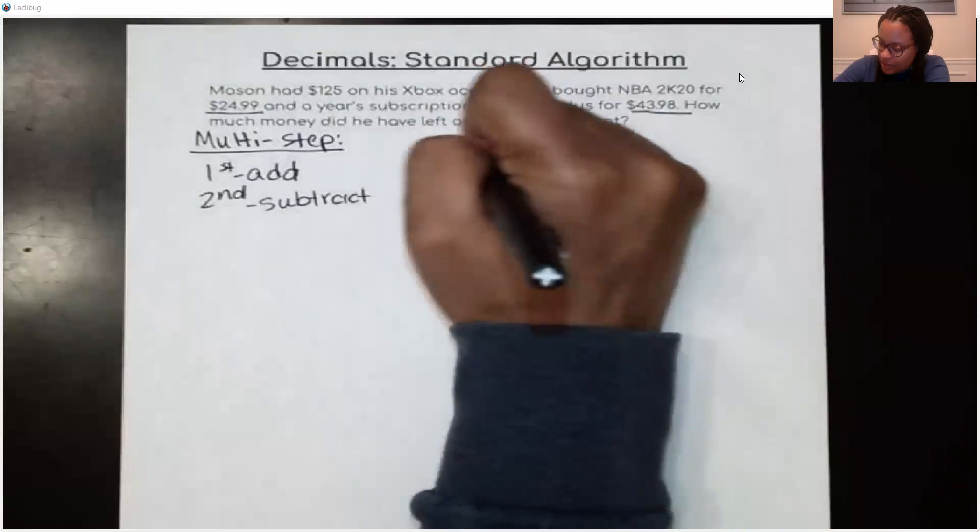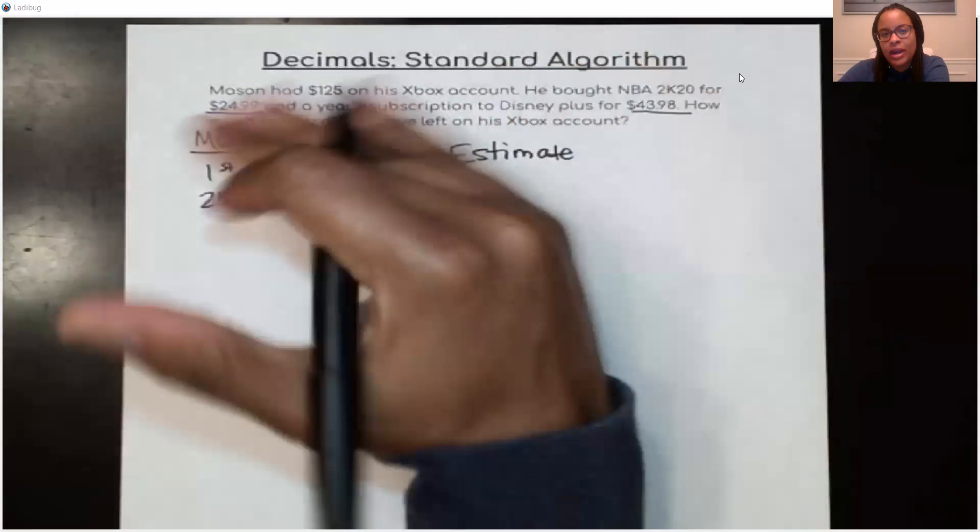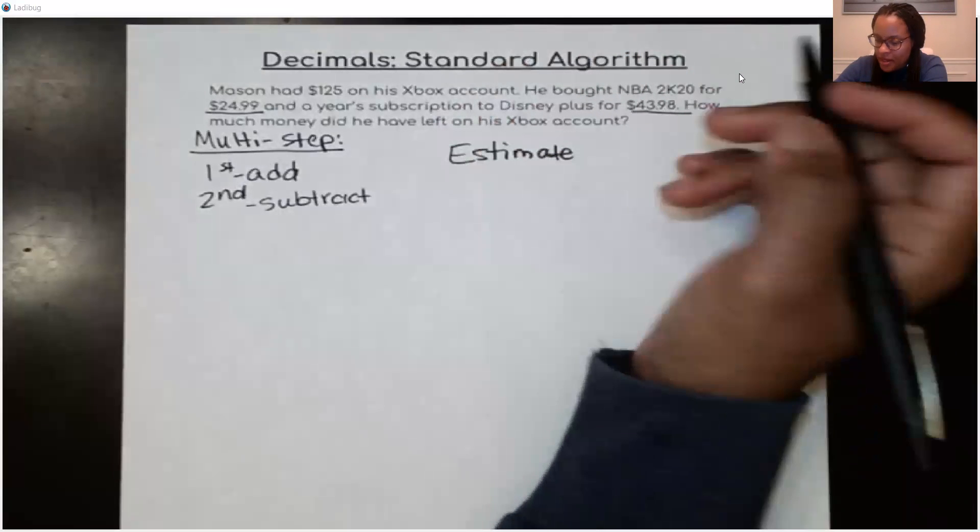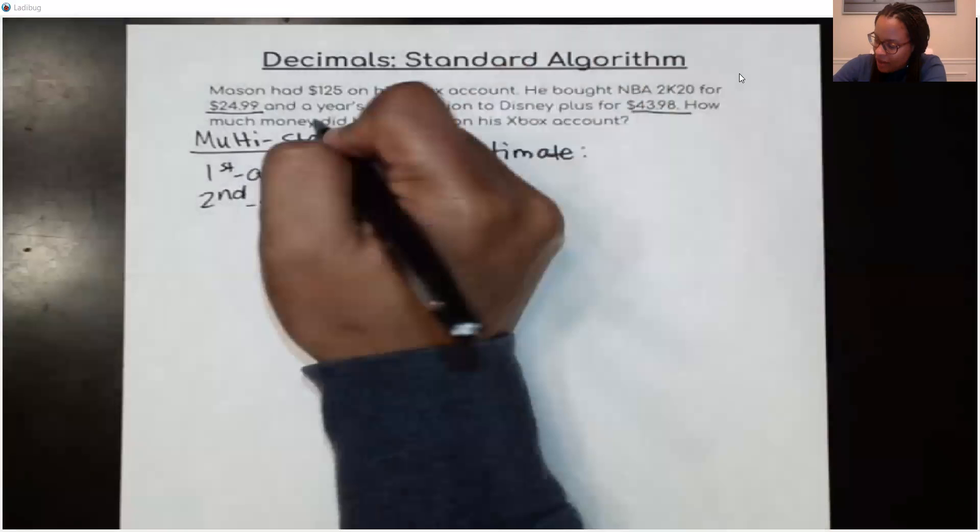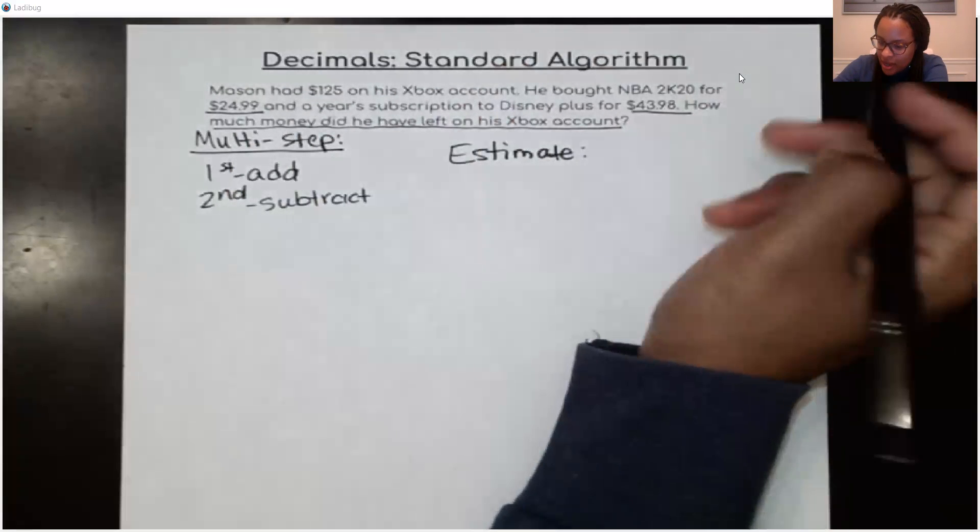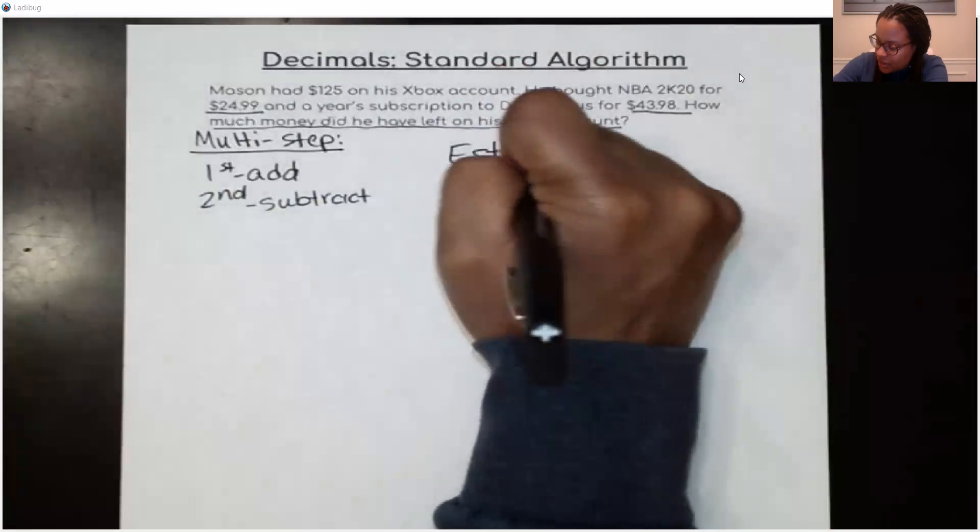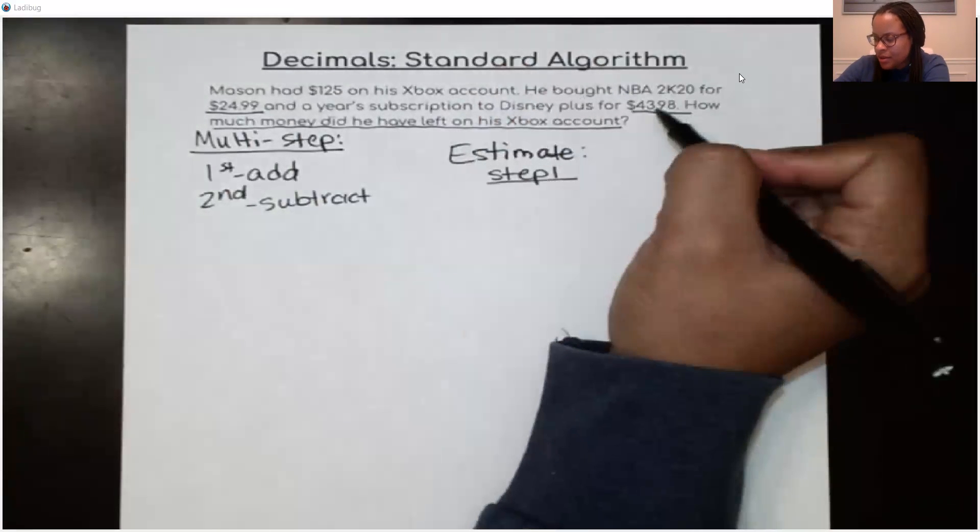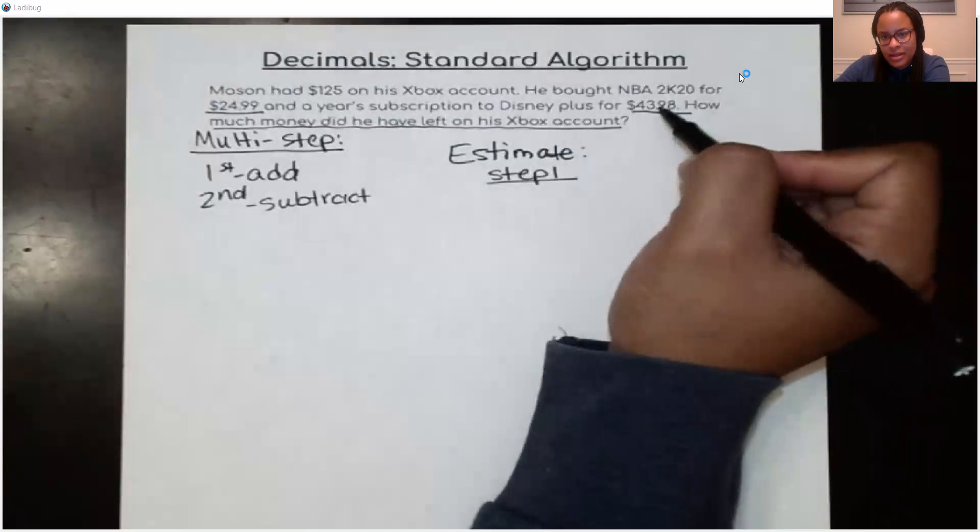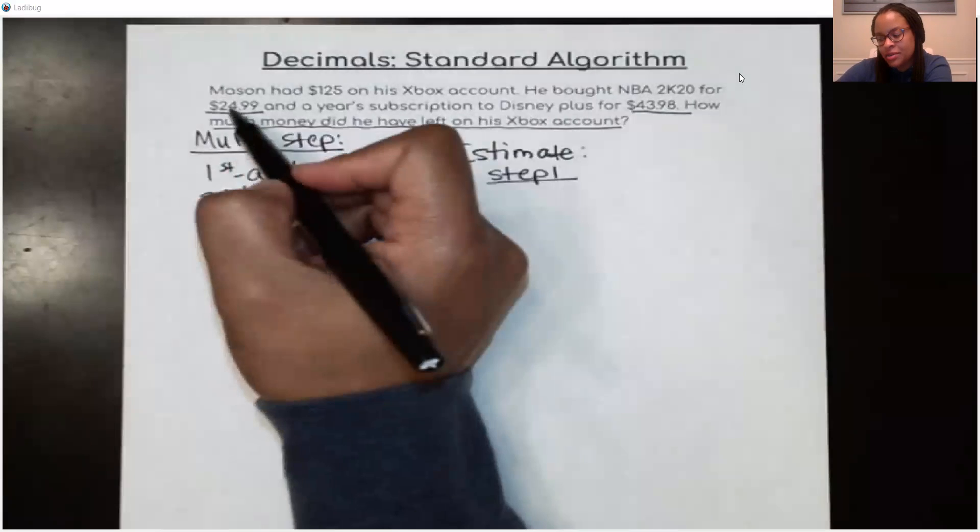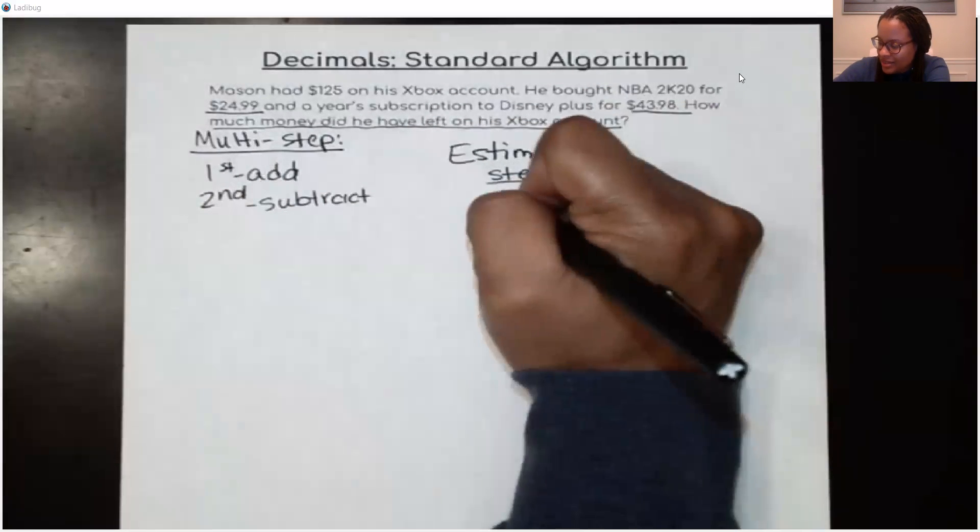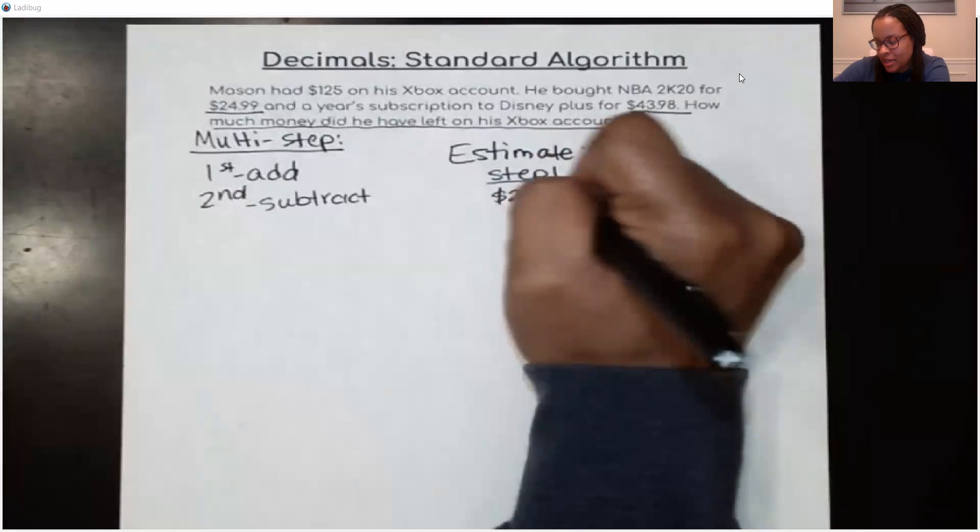So just to make sure that I'm in the right ballpark when it comes to figuring out what my final answer is supposed to be. So if I estimate, I need to figure out about how much money did he have left on his Xbox account. So first, I'm going to do my step one, and I'm just going to estimate. So I'm going to estimate the $43.98 to the rounded dollar amount. And then I'm going to also do the same here. So $24.99 can just be rounded to $25 even.